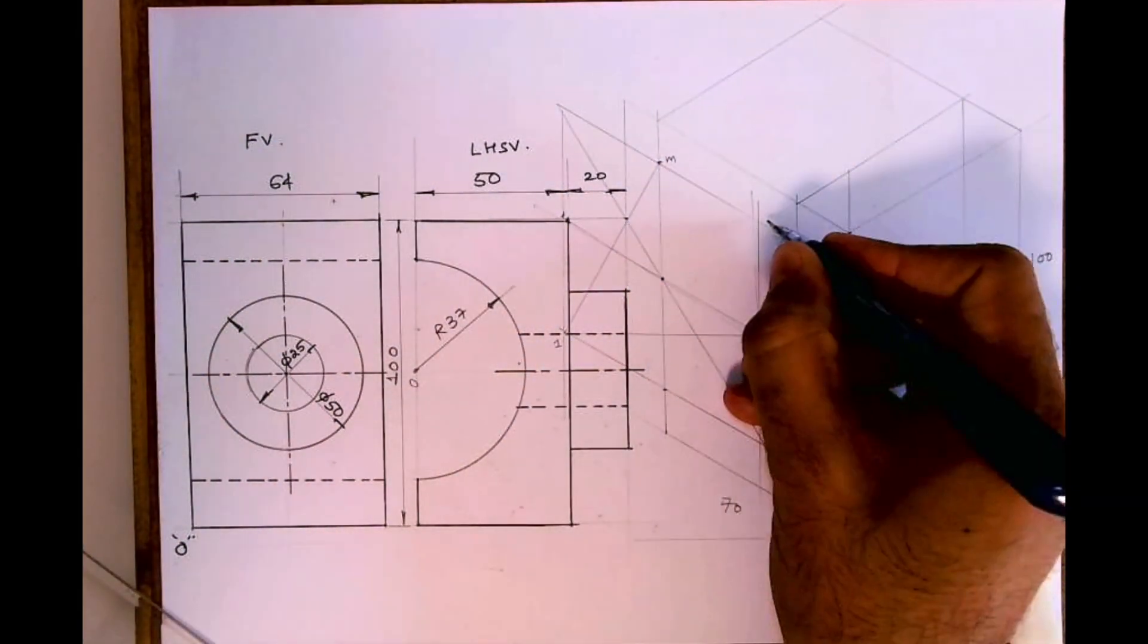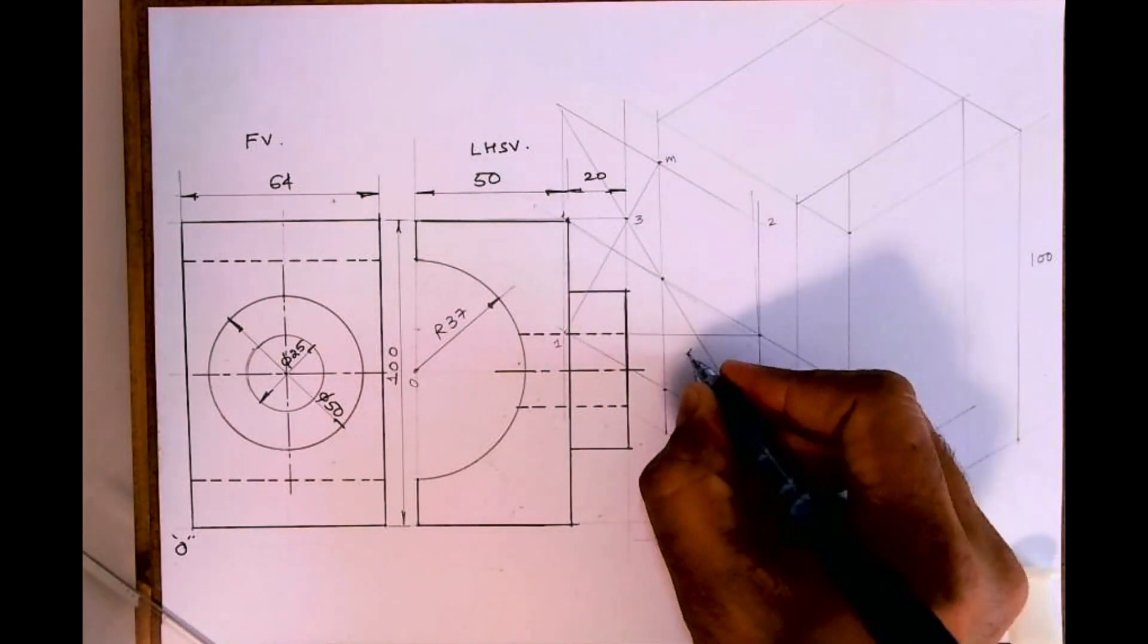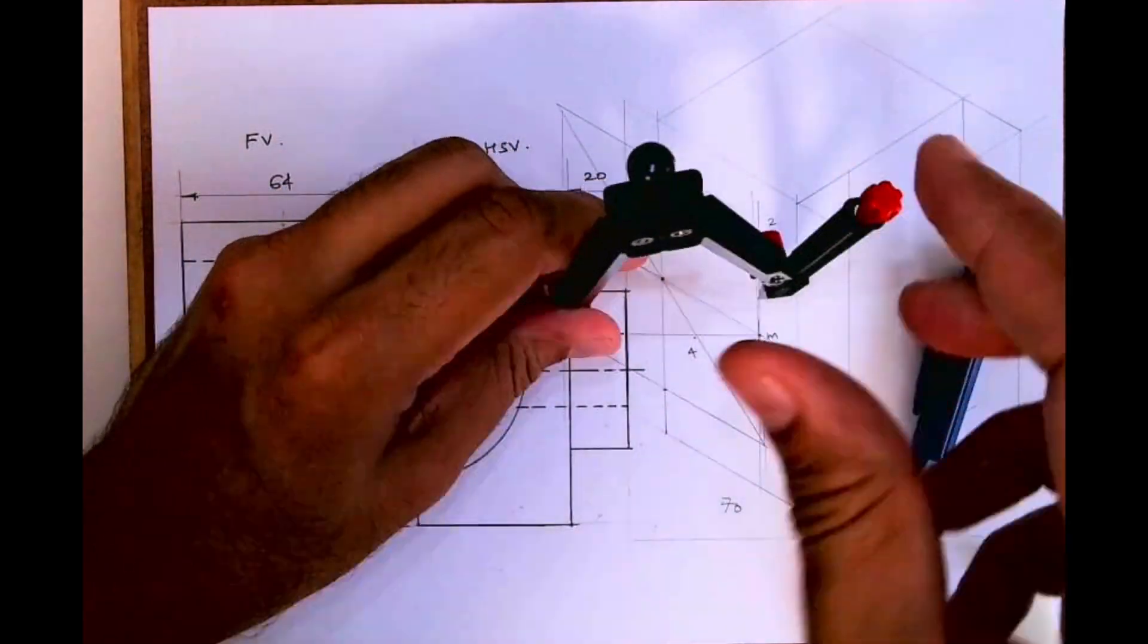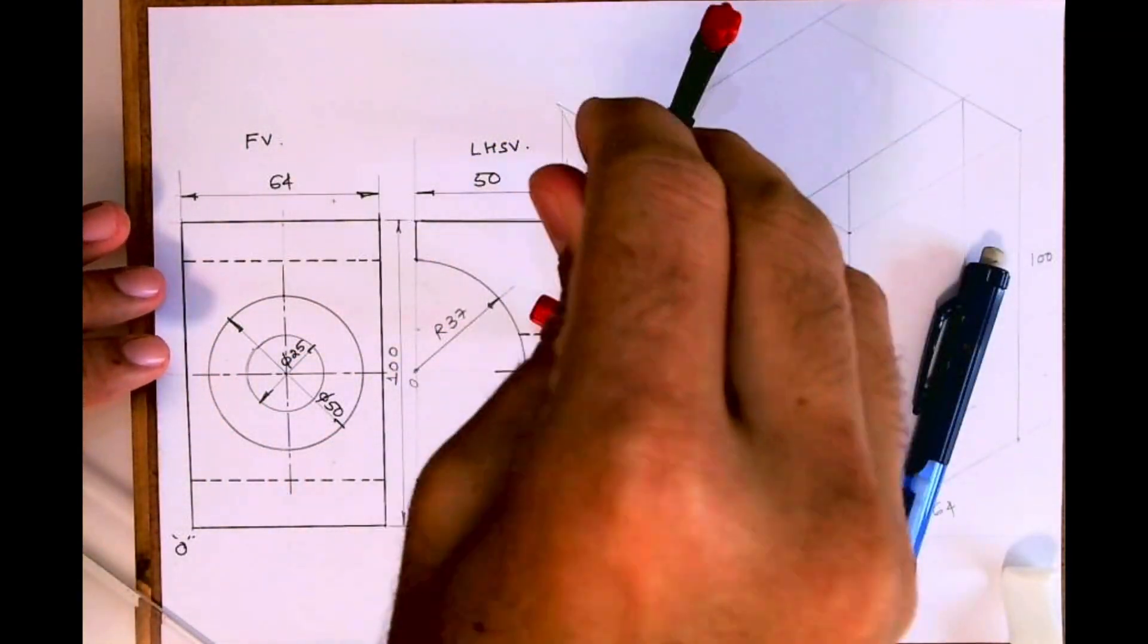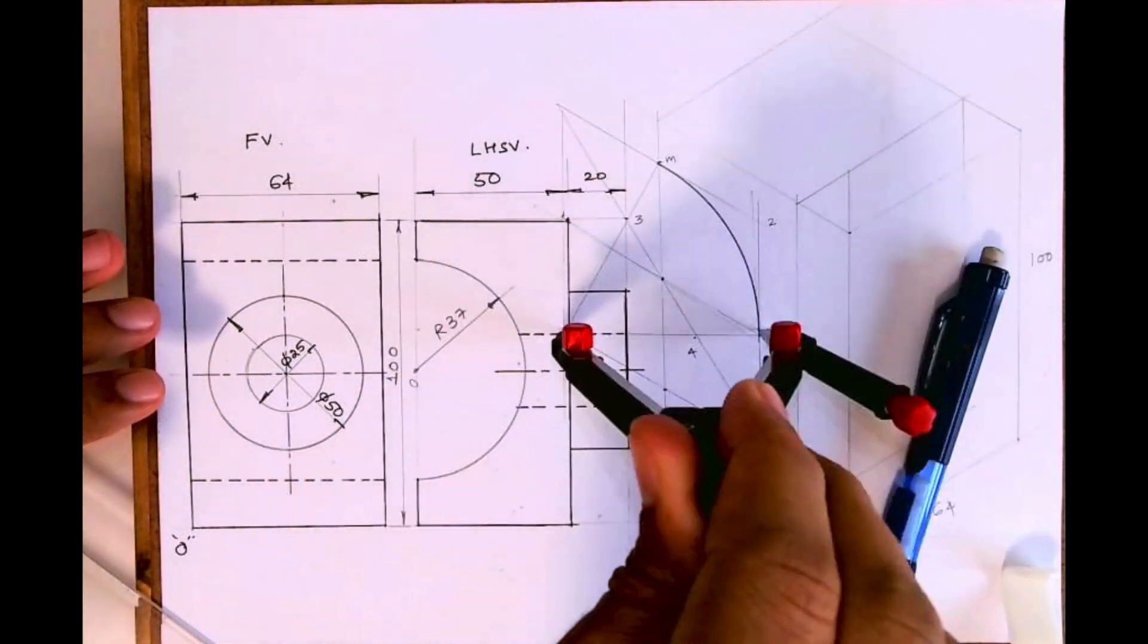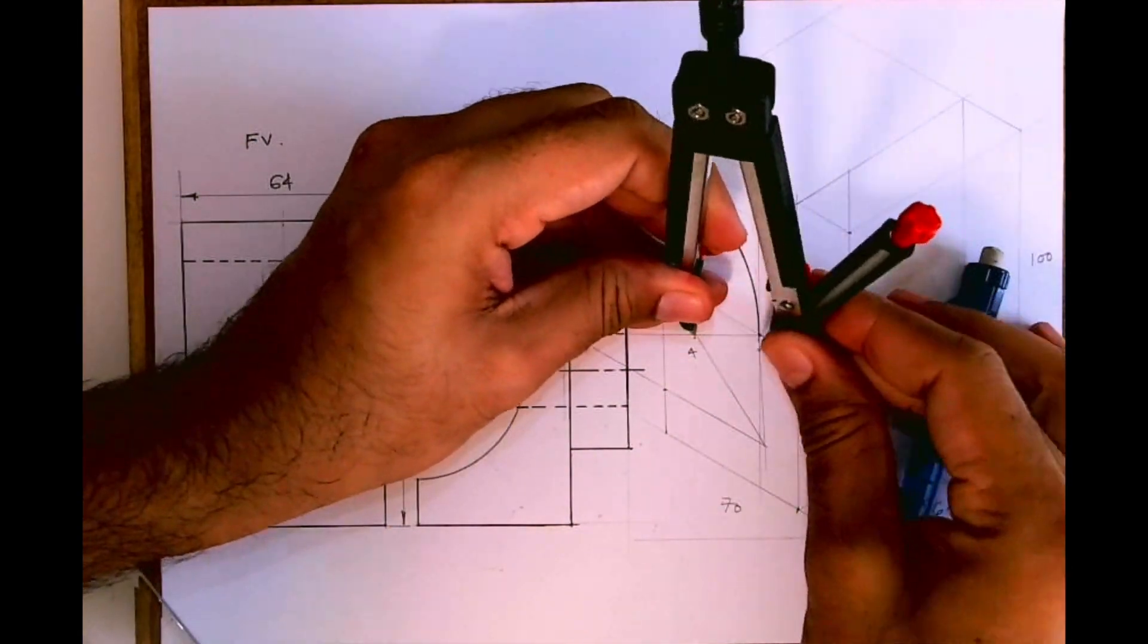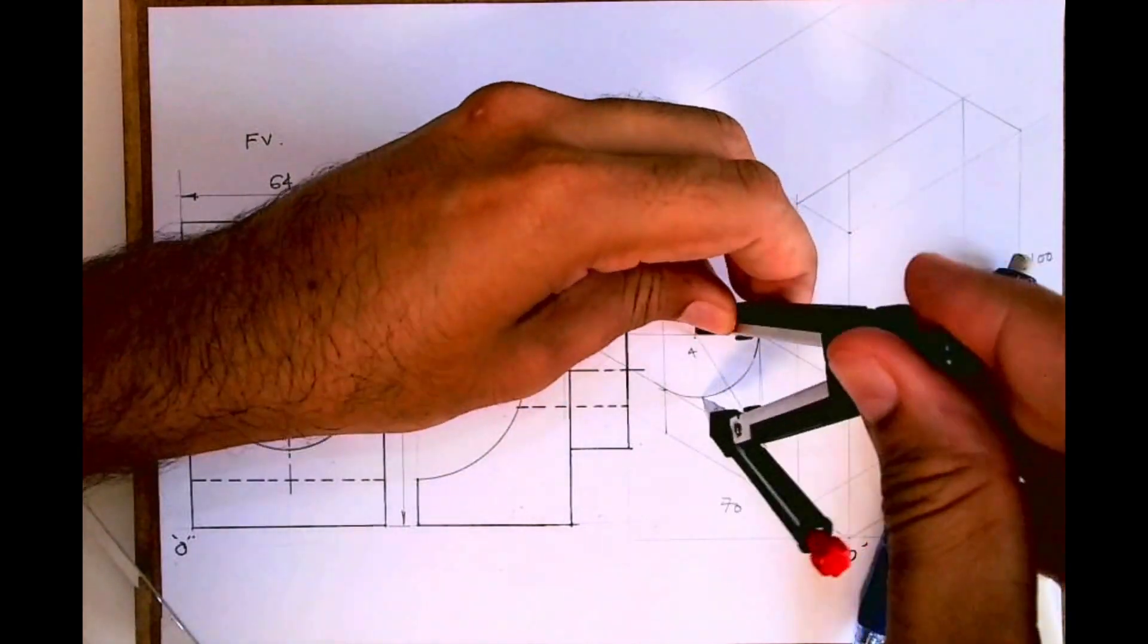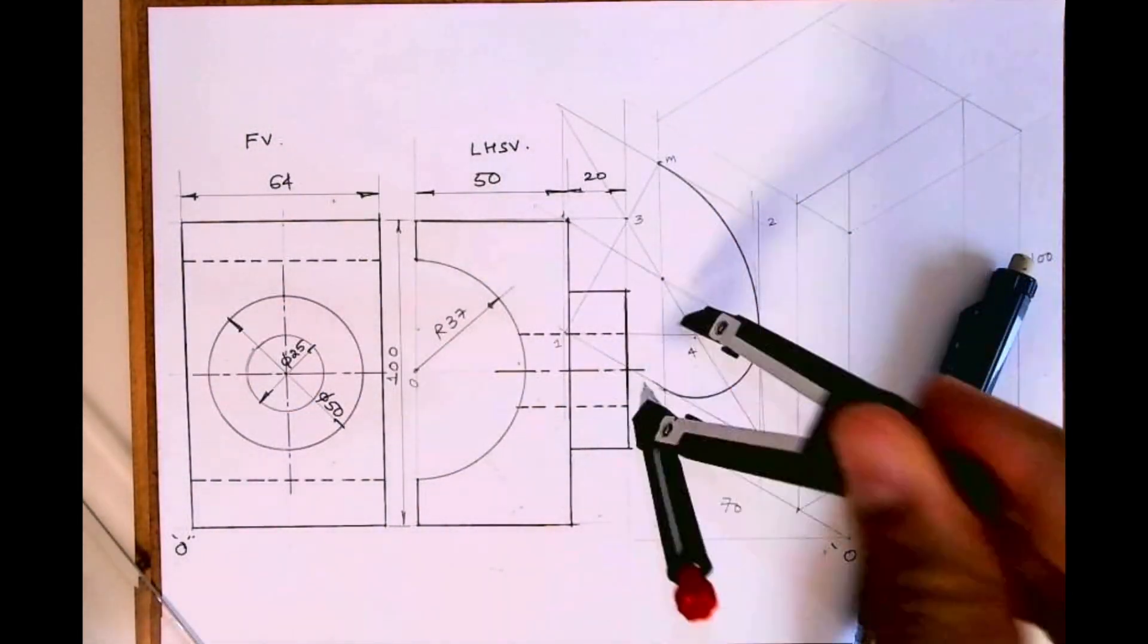M, two, three, four, M. Now we'll take one to M and we'll draw arc. Four to M and we'll draw arc.